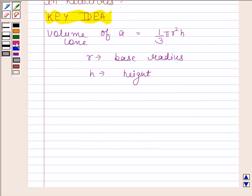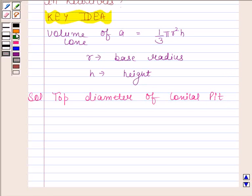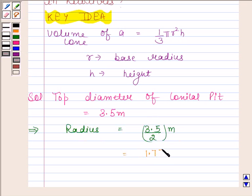Let us now begin with the solution. In the question, we are given that top diameter of conical pit is 3.5 meters. As diameter is equal to 3.5 meters, this implies its radius is equal to 3.5/2 meters, and this is equal to 1.75 meters.